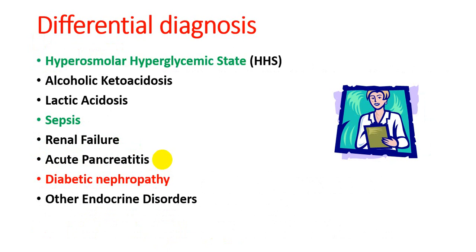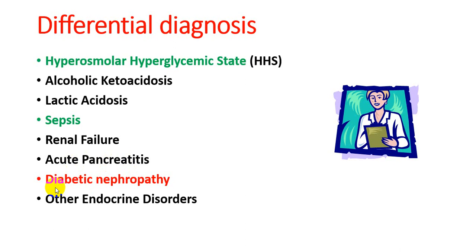Differential diagnoses include hyperosmolar hyperglycemic state, which is similar to DKA but has no metabolic acidosis or ketosis and develops after 24 hours. Alcoholic ketoacidosis occurs in heavy alcohol users. Lactic acidosis can occur with severe infection or certain medications. Sepsis presents with symptoms similar to DKA. Renal failure may show metabolic acidosis and electrolyte imbalance. Acute pancreatitis can present with abdominal pain and disturbed insulin levels. Diabetic nephropathy and other endocrine disorders like adrenal insufficiency are also differentials.